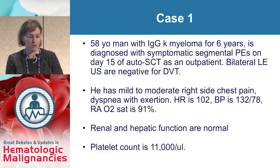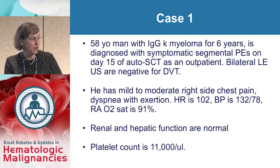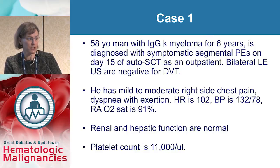I have a case-based format. For case one, these are actual cases I've encountered. We have a 58-year-old man with IgG kappa myeloma treated for six years. He is diagnosed with a symptomatic segmental PE on day 15 after autologous stem cell transplant as an outpatient. Bilateral lower extremity ultrasounds are negative for DVT. He has mild to moderate right-sided chest pain, dyspnea with exertion, heart rate 102, blood pressure 132/78, room air O2 saturation 91%. Renal and hepatic function are normal and his platelet count is 11,000.